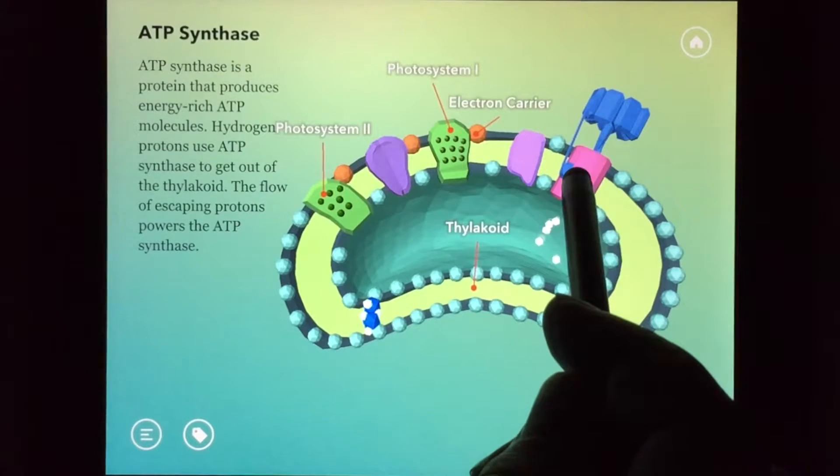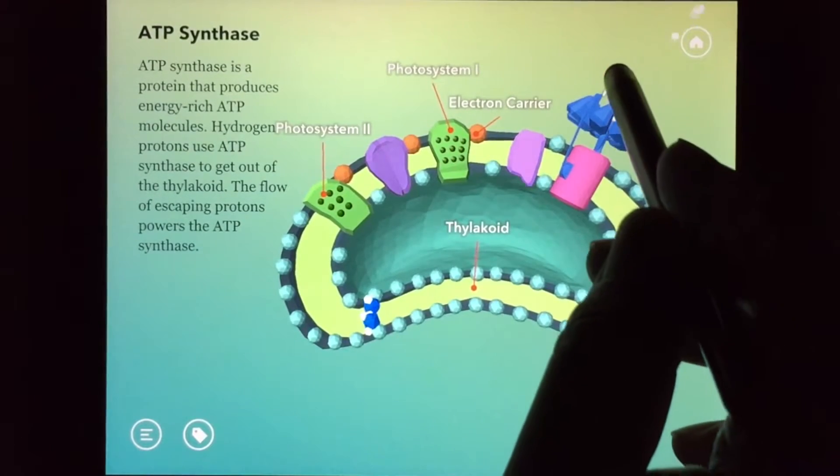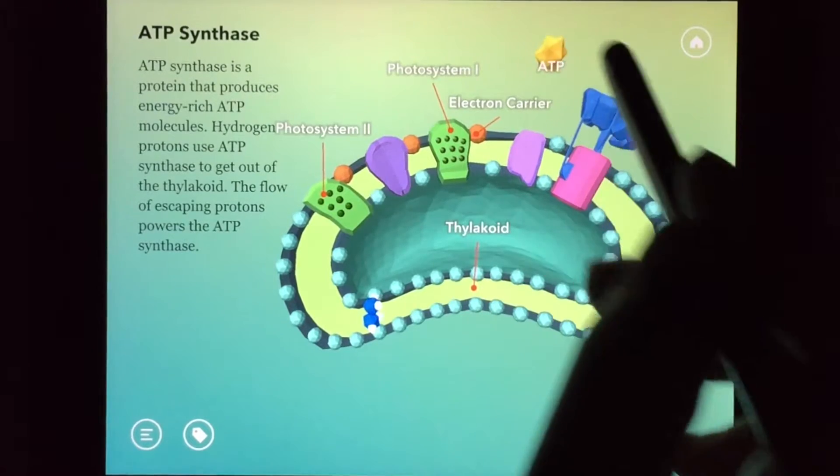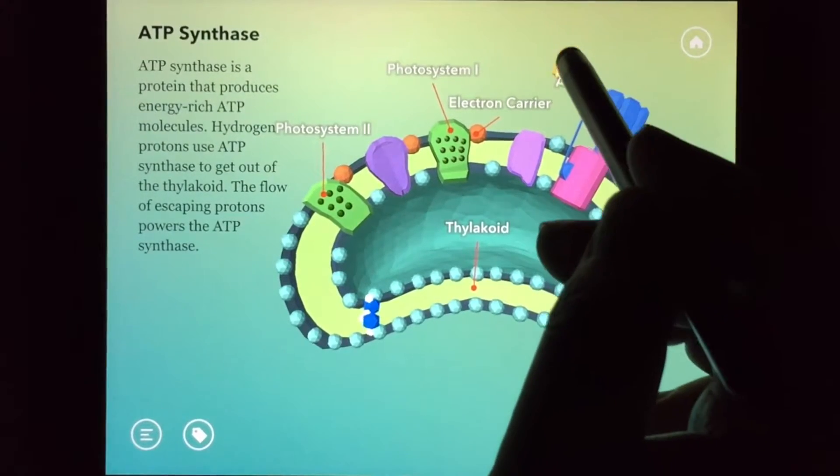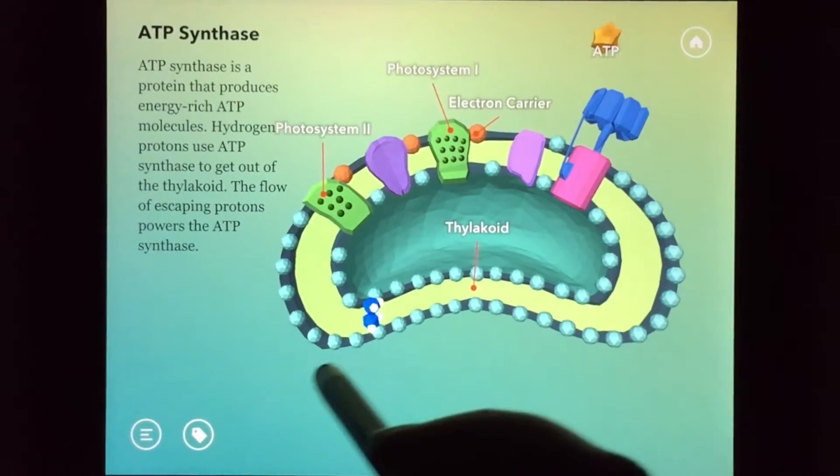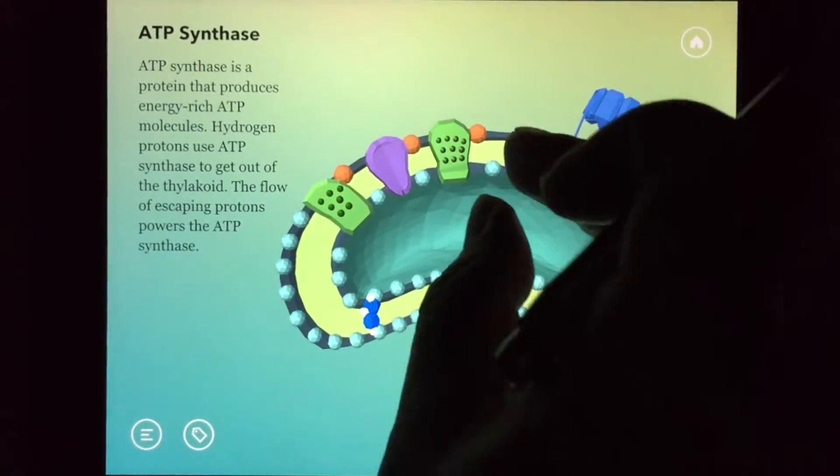As you can see here, if there are a lot of hydrogen ions inside the thylakoid, they start to escape the thylakoid. This flow powers the ATP synthase.